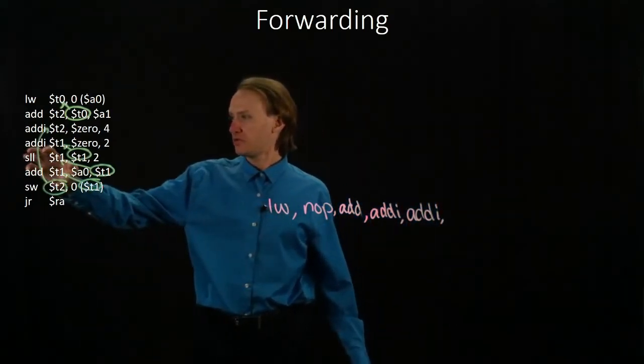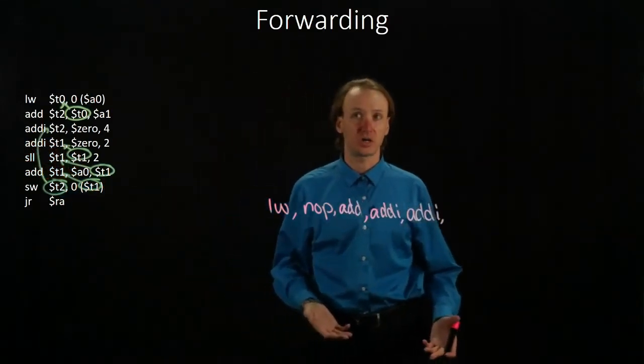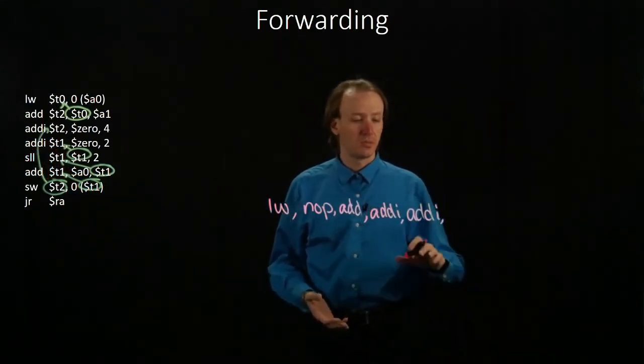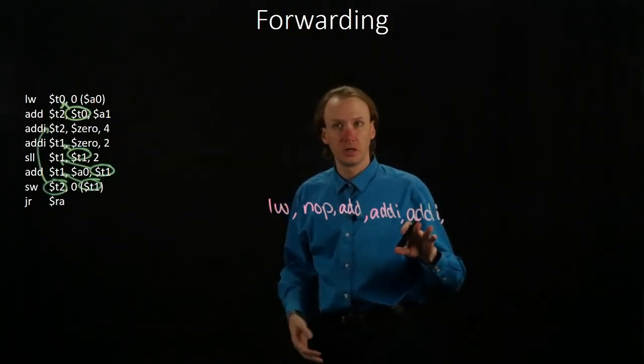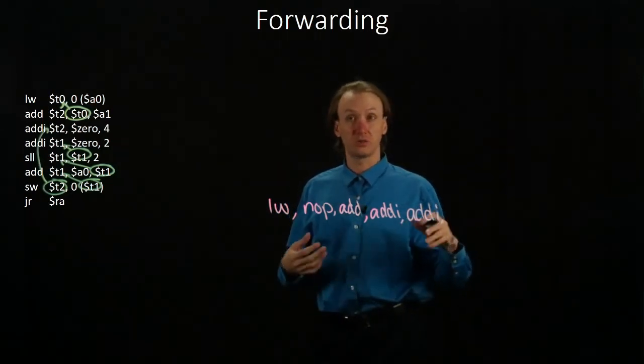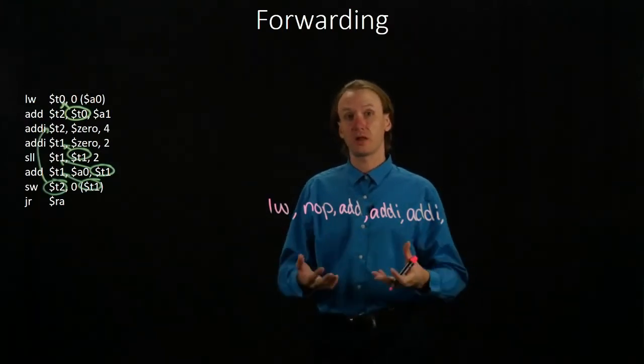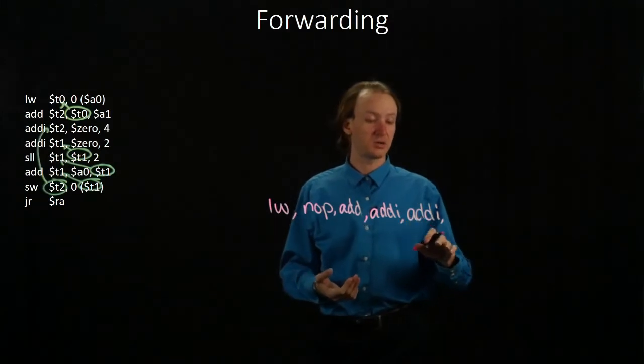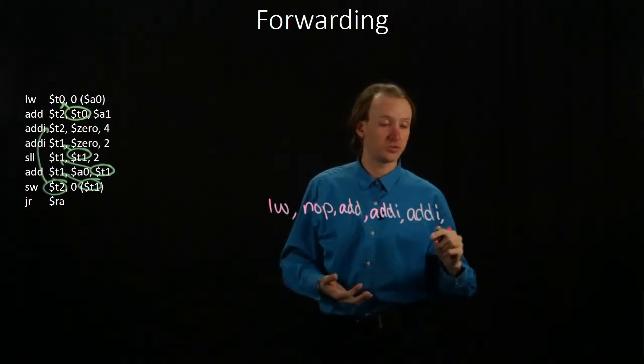Next, I have a shift-left logical instruction, which is dependent on the second add immediate instruction. But our add immediate instruction will compute its results in the third cycle, and the shift-left logical will want to use those results in its third cycle, so they'll be available through forwarding. I won't have to wait any cycles after the add immediate before I can start my shift-left logical instruction.